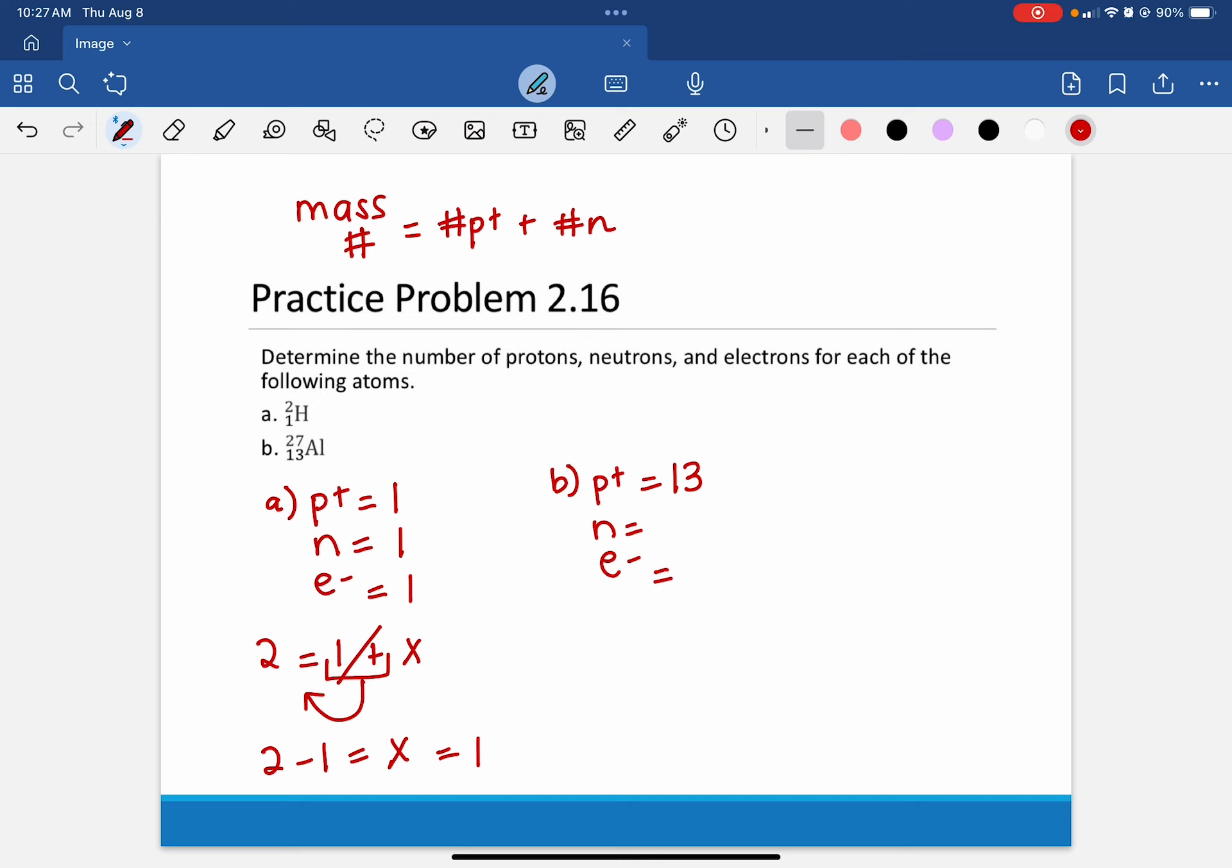Because we've not started talking about ions, because this has no charge, because it is electrically neutral, the number of protons equals the number of electrons. That will not always be true, but for this chapter, because it's electrically neutral, that is the case.